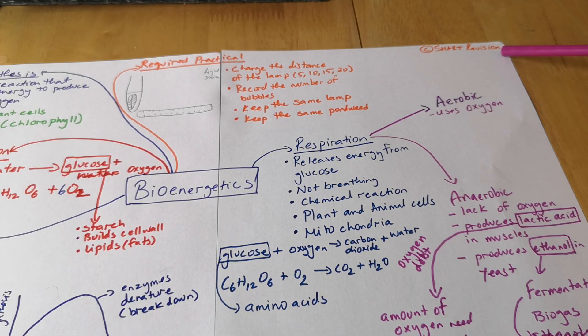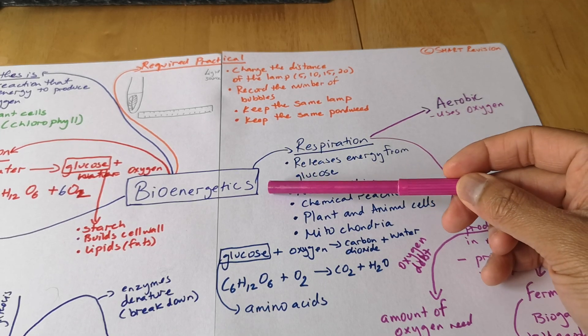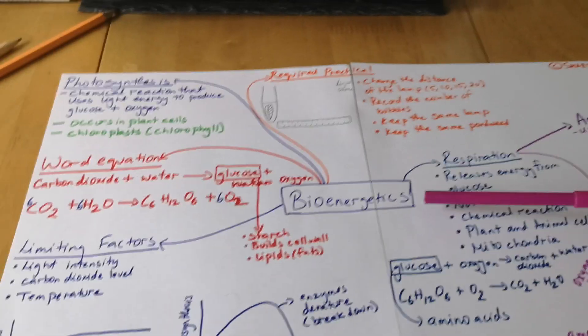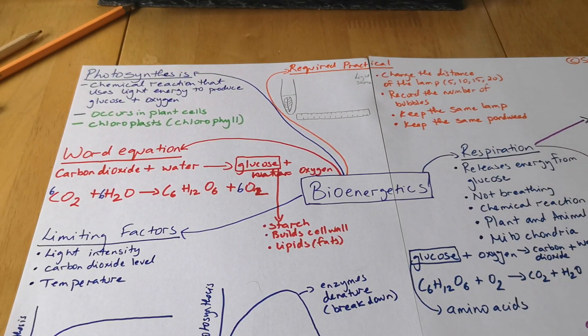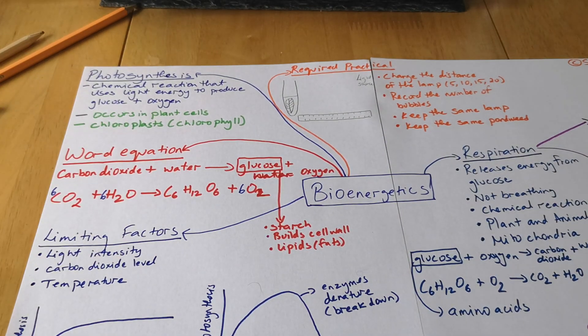Hi guys, welcome to my channel on smart revision. Today we'll be doing a mind map on bioenergetics. Bioenergetics is split into two halves: photosynthesis and respiration. I'll run through photosynthesis first and then we'll get respiration.